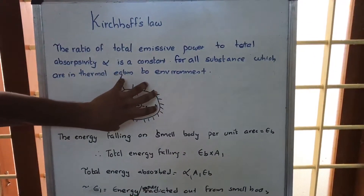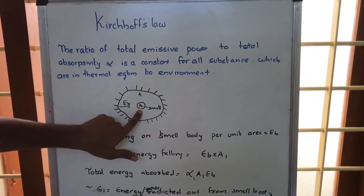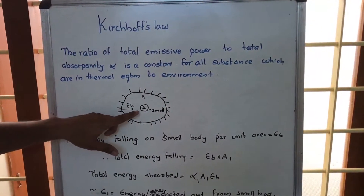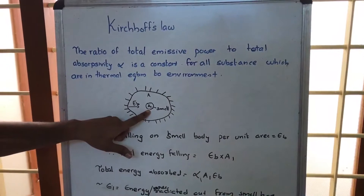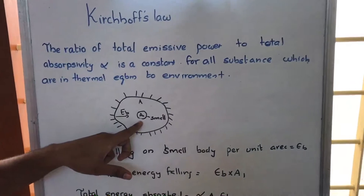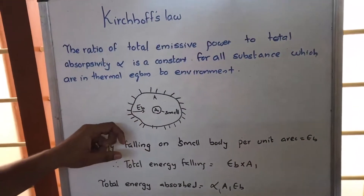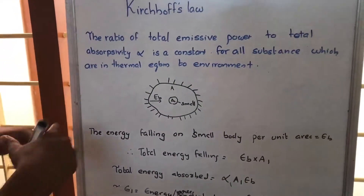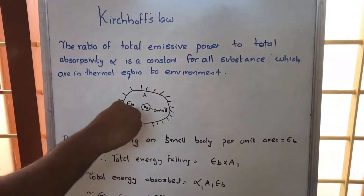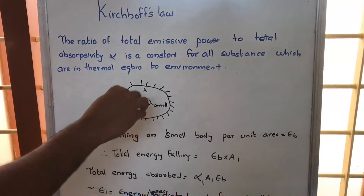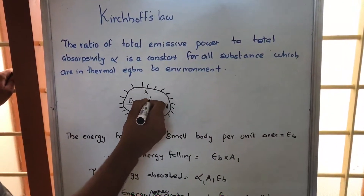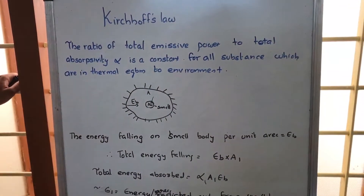We are having a larger body and a smaller body. The smaller body has an area A1, and the energy falling per unit area on this small body is taken as Eb. The larger body is radiating energy out, and that energy is falling on this smaller area. If we have a unit area here, then the energy falling on that unit area is taken as Eb.